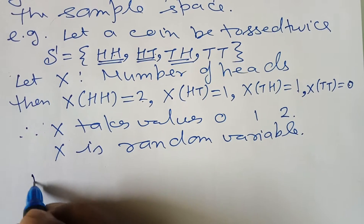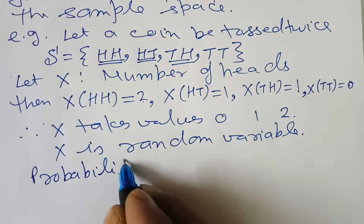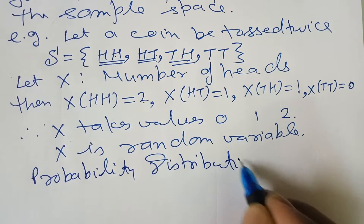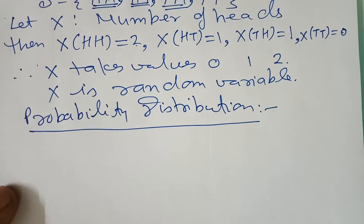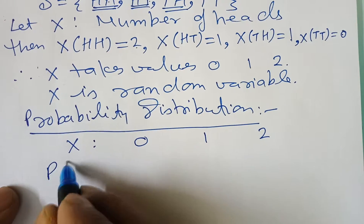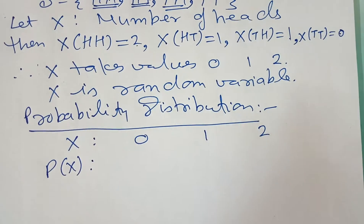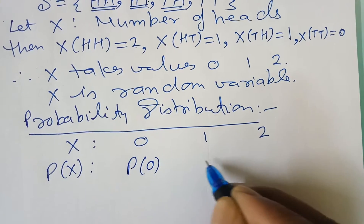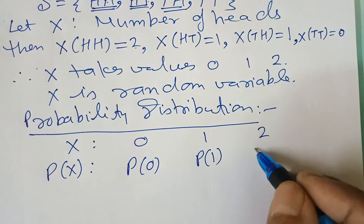We can now write the probability distribution. The probability distribution shows values of x — 0, 1, 2 — along with their corresponding probabilities. This is called probability distribution. x takes values 0, 1, 2 and P(x) takes values P(0), P(1), P(2).